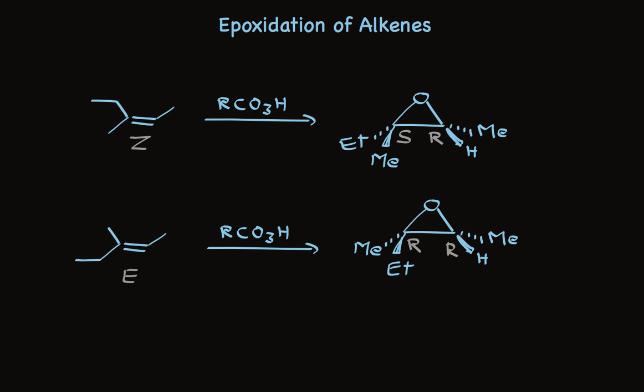Here's an example. When this alkene, which has a Z-stereochemistry, is treated with a peracid, the epoxide is made and the relationship between the alkyl groups attached to the alkene remains unchanged. In the starting material, this ethyl group and methyl group are on the same side of the double bond, and they remain on the same side of the ring in the epoxide.